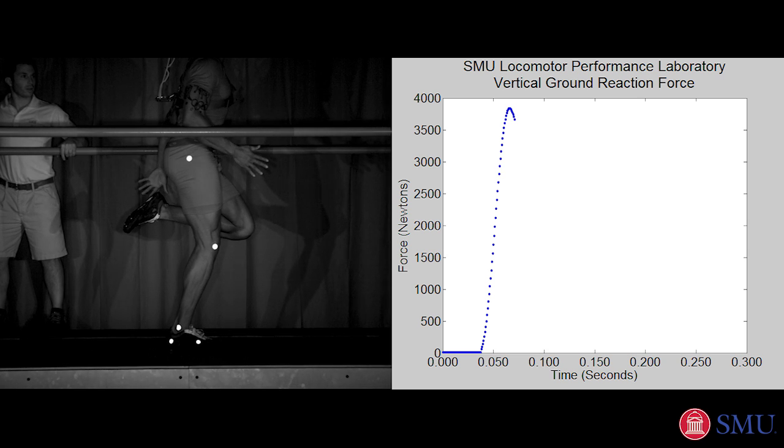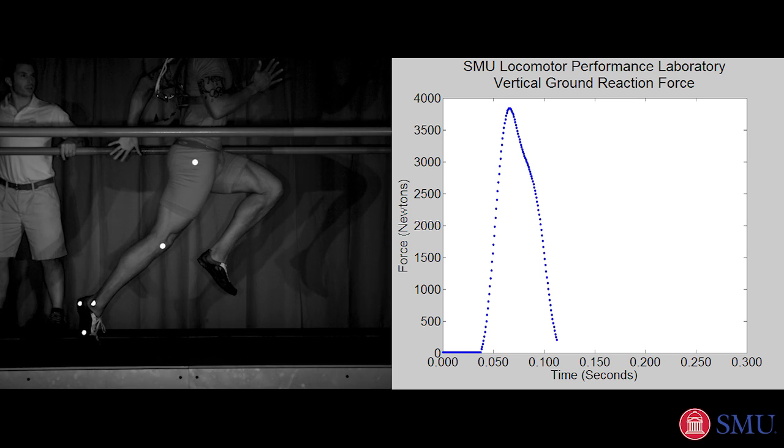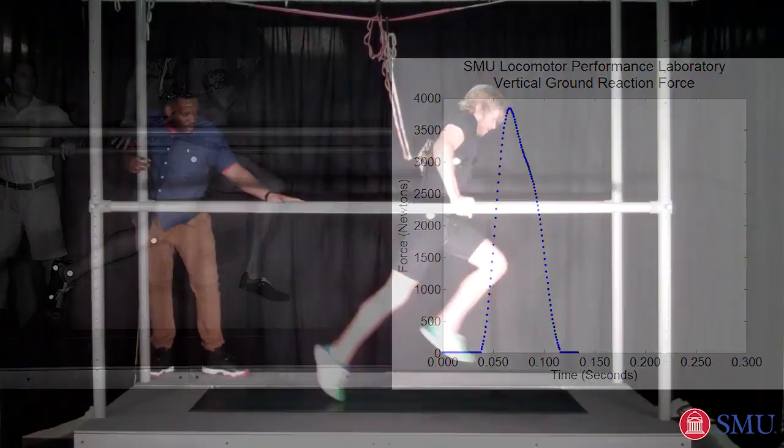To run fast, sprinters apply forces up to five times their body weight in less than 100 milliseconds on each leg.